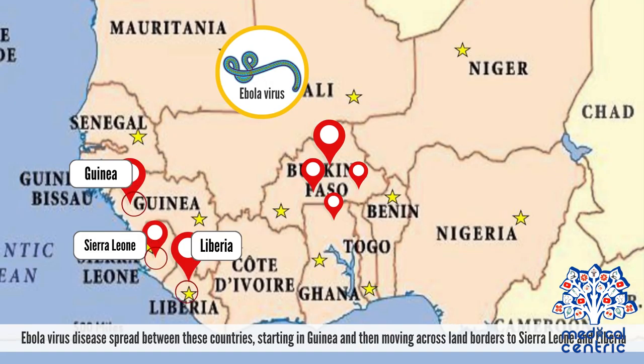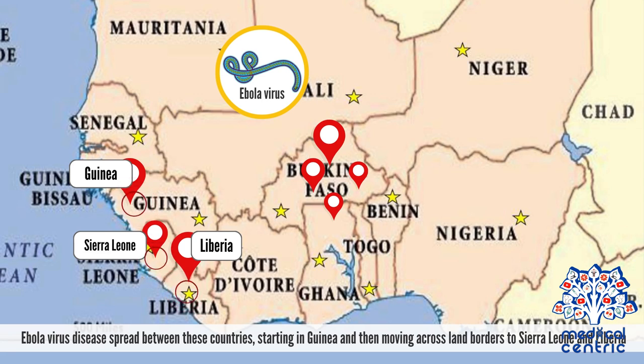Ebola virus disease spread between these countries, starting in Guinea and then moving across land borders to Sierra Leone and Liberia.